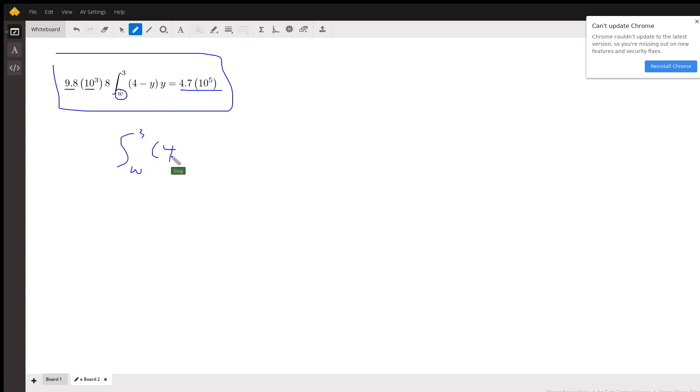4 minus y times y. Oops, I forgot the dy. Equals 4.7 times 10 to the fifth. Divided by 9.8 times 10 cubed. Times 8. You can set this up. You can evaluate or find the antiderivative evaluate from w to 3 and solve for w. You might have to use a calculator to actually find out what w is. OK. There you go.